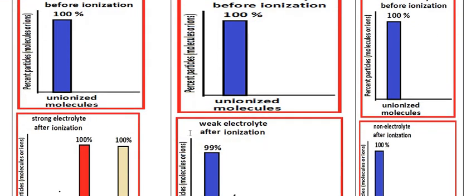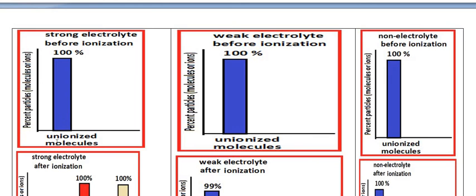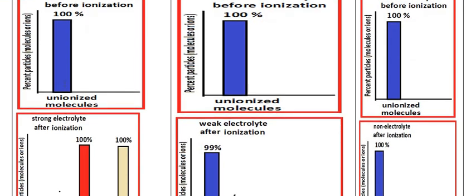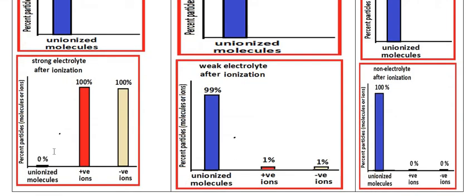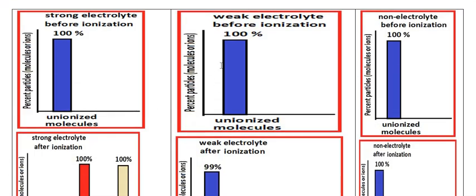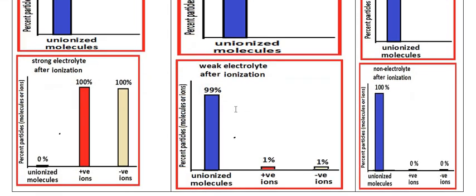This graph represents the strong electrolyte. At the beginning, sodium chloride for example is present as undissociated molecules before dissolution. After dissolution, unionized molecules are zero — all molecules are dissociated completely to produce 100% positive ions and 100% negative ions.